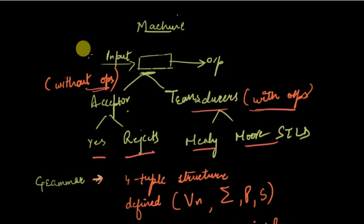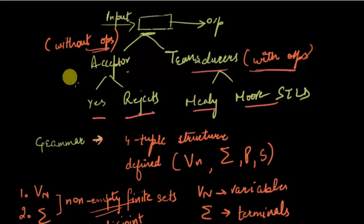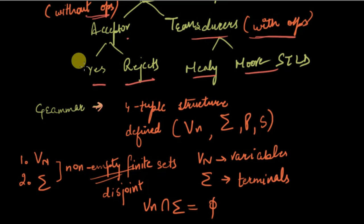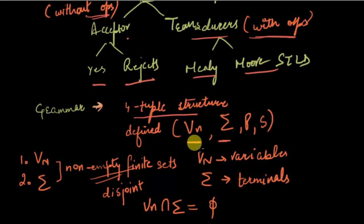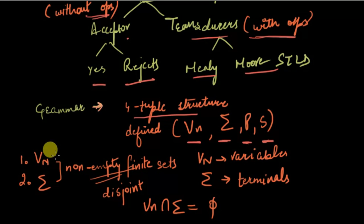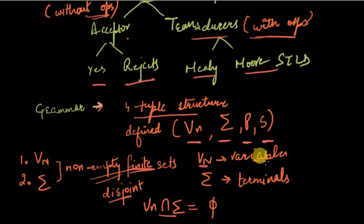Next comes grammar. Similar to the English language where we have grammar to make meaningful sentences, here also we have grammar for the formal machine language. It is defined as a four-tuple structure with four parameters: VN, sigma, P, and S. VN and sigma are non-empty finite sets which are disjoint, meaning they have nothing in common. VN is known as the variables which are non-terminal, and sigma contains the terminals.